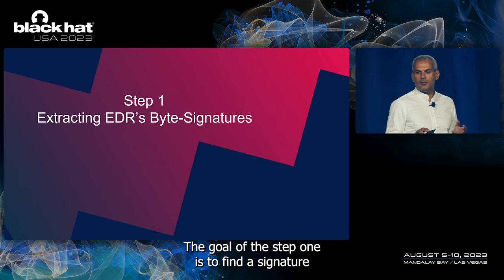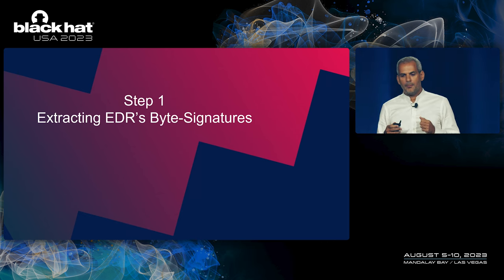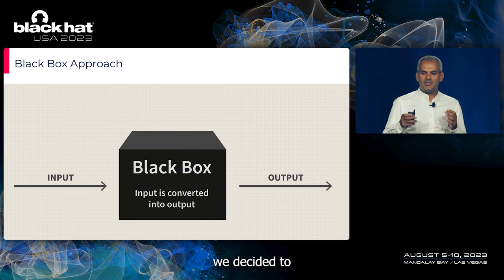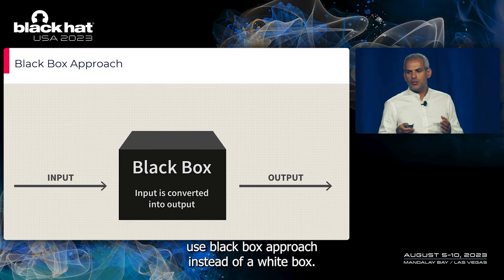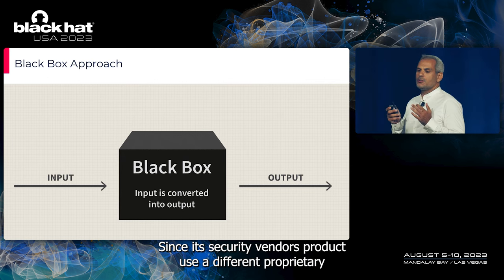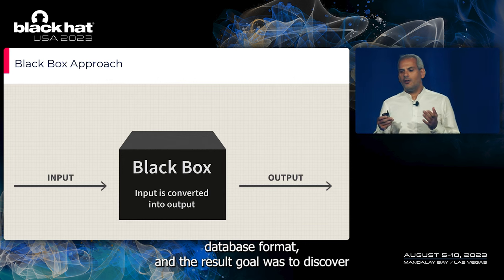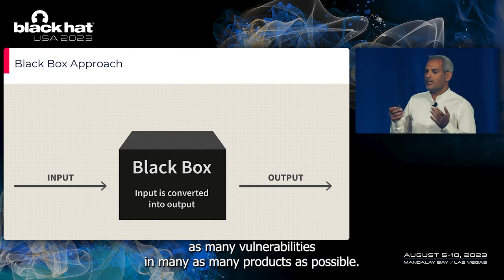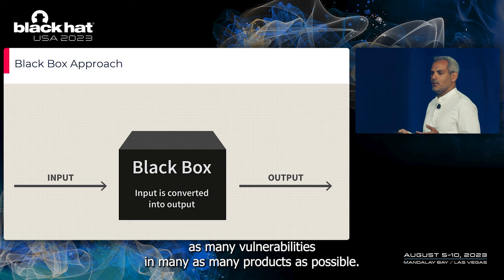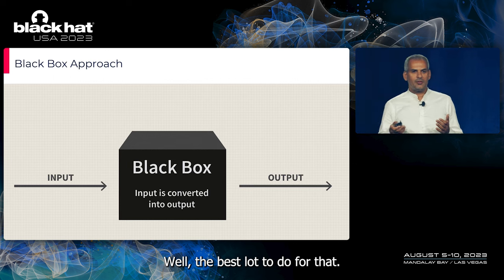The goal of step one is to find a signature that will trigger automatic deletion when appended to an empty file. We decided to use a black box approach instead of white box, since each security vendor's product uses a different proprietary database format, and the research goal was to discover vulnerabilities in as many products as possible. Black box was the best strategy for that.